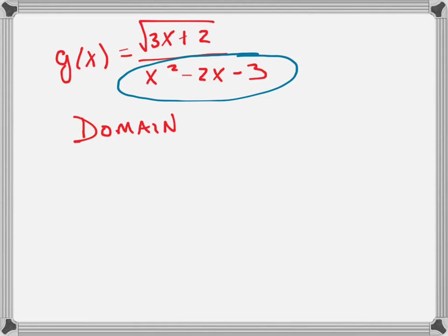You can't divide by 0. So that's the first thing that's going to create a restriction. This cannot equal 0. So let's find out when that does equal 0.